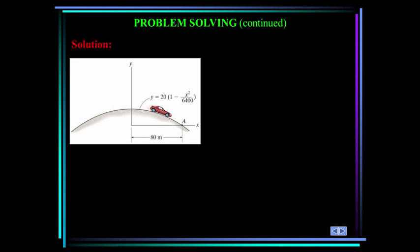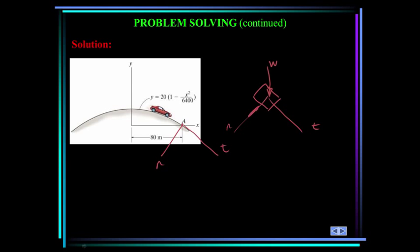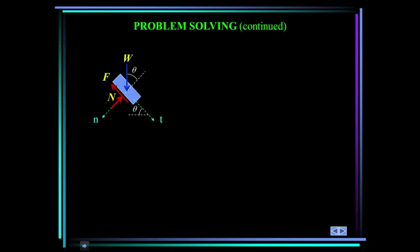Establishing the coordinate frame at point A: the normal direction points inward and the tangential direction is along the path. The free body diagram of the vehicle includes the weight, the normal force, and a frictional force. The road at this point is at some unknown angle theta, which we'll also need to solve for.